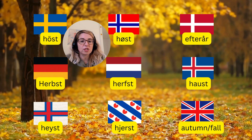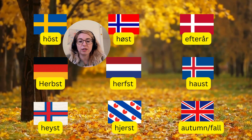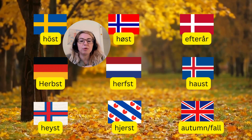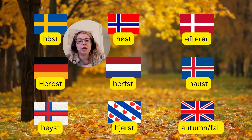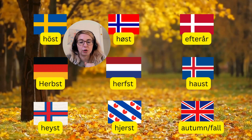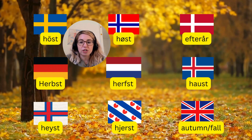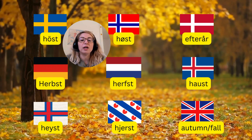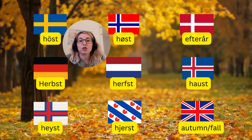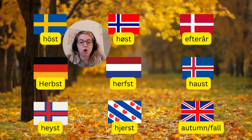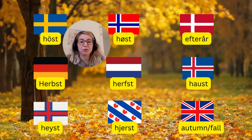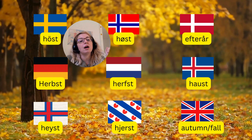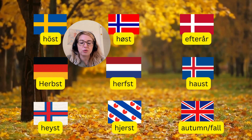Let's start with autumn. It's pretty clear which one is the odd one out. In Swedish and Norwegian you have 'höst', in German 'Herbst', in Dutch 'herbst', 'haust' in Icelandic and so on. The English word 'autumn' does not share a common root with the others. However, Danish uses the term 'efterår', which literally means 'after the year', so a later period during the year.